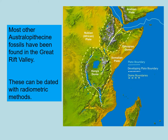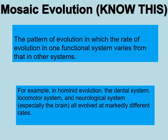Apart from our Africanuses found in South Africa, we also find Australopithecine fossils in the Great Rift Valley in Ethiopia, dated using radiometric methods like carbon and potassium-argon dating. As we look at various species in the genus Australopithecine as well as Ardipithecus and Homo, we see changes that occurred at different parts of the body at different times — this is mosaic evolution: a pattern in which the rate of evolution in one functional system varies from that of others. Your dental, locomotor, and neurological systems all evolved at different rates.